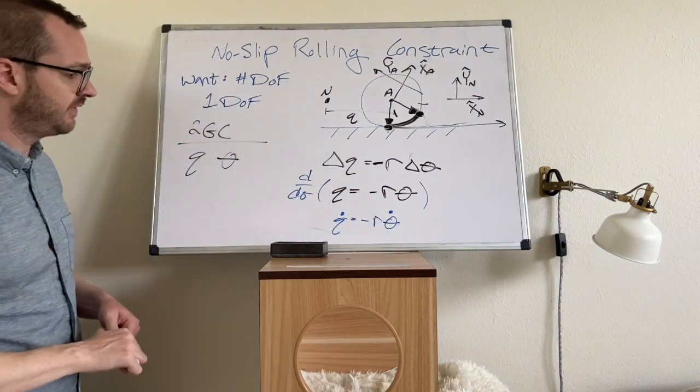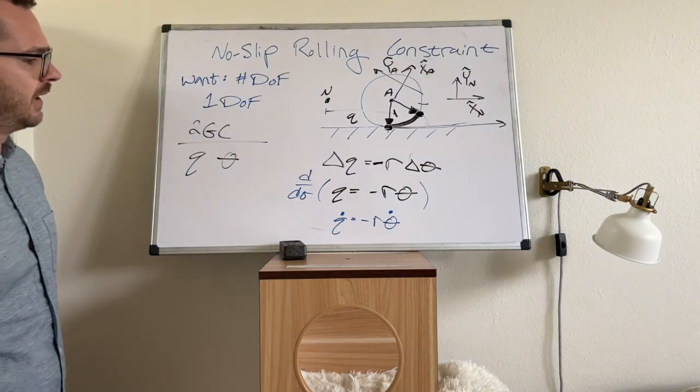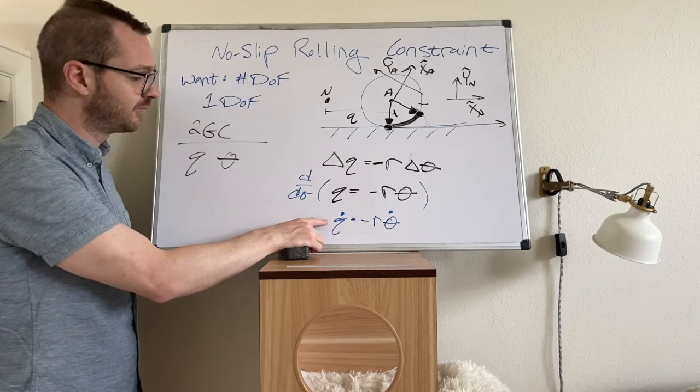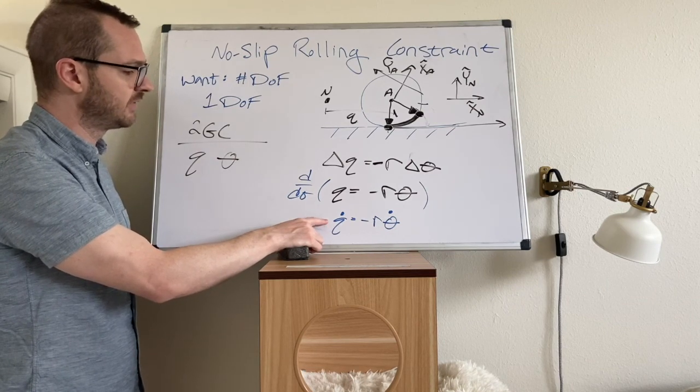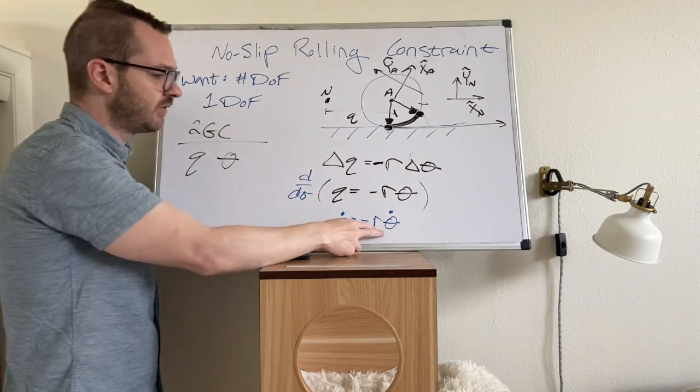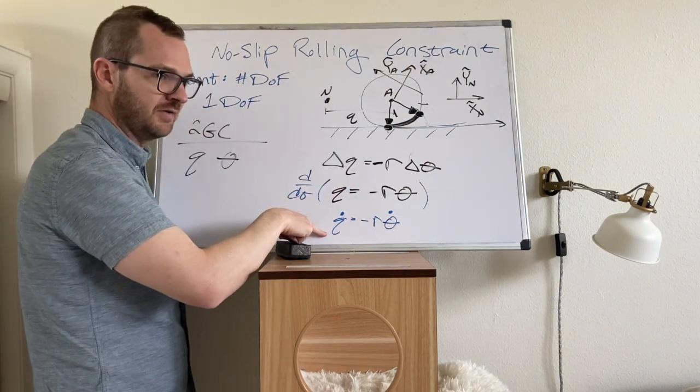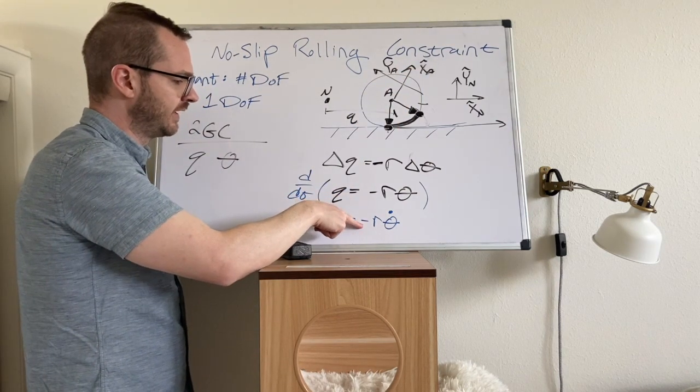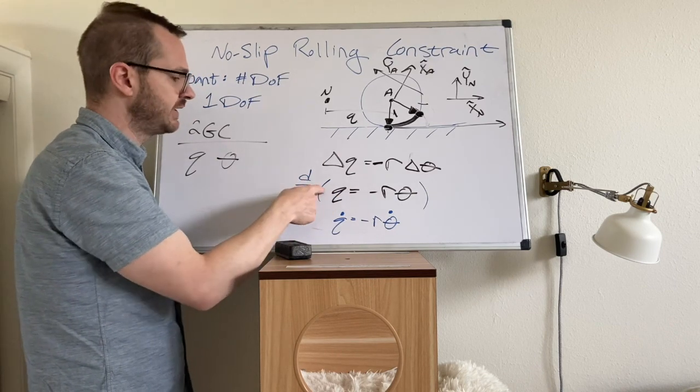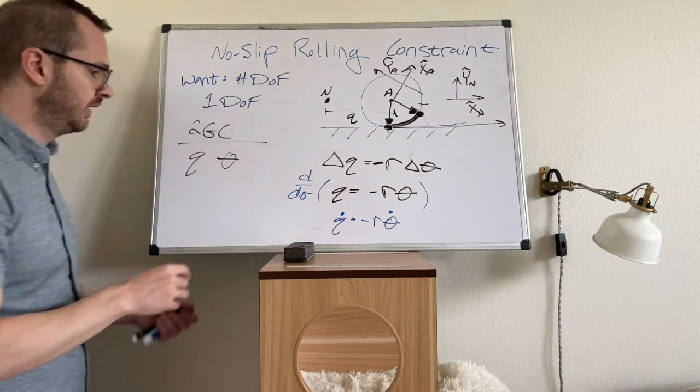So q dot equals negative r theta dot. Again, we haven't formally gotten into velocity, so we're going to talk about all these scalar speeds later, but this equation, this is a good equation. This is really your no-slip rolling constraint, because oftentimes, again, we compare speed. So if you have an angular velocity of the wheel, if this thing is actively rotating, you're going to have some translational velocity as well, and there's going to be a negative on it. If you add offsets to these position equations, that's fine. Just realize all those offsets, they all go to zero when you look at the velocity constraints.